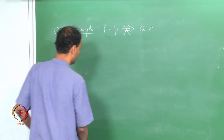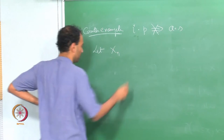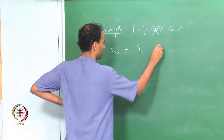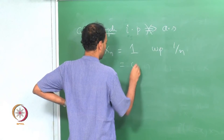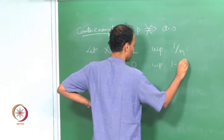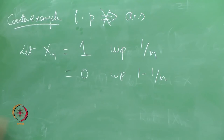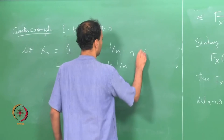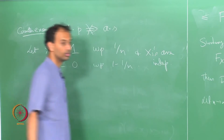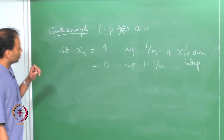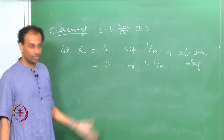Let X_n equal 1 with probability 1/n and 0 with probability 1 − 1/n. The X_i's are independent. As n becomes larger it becomes increasingly unlikely that X_n takes value 1.